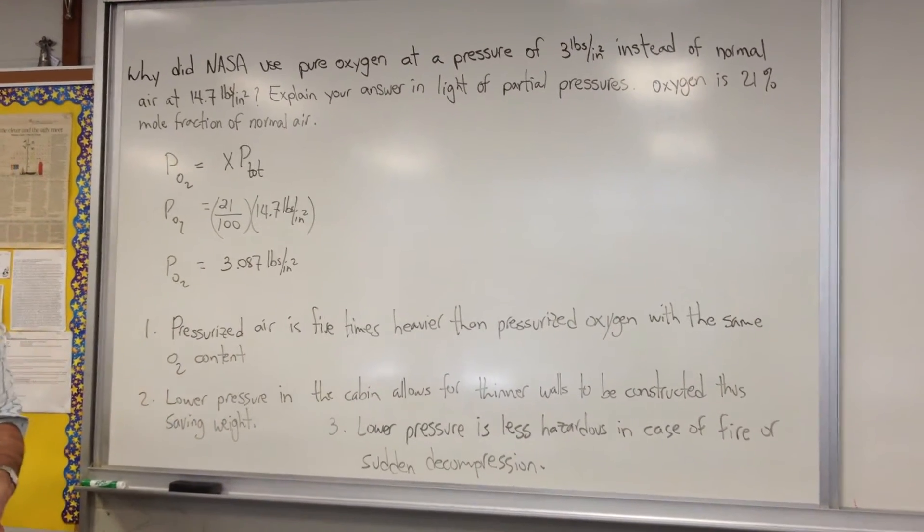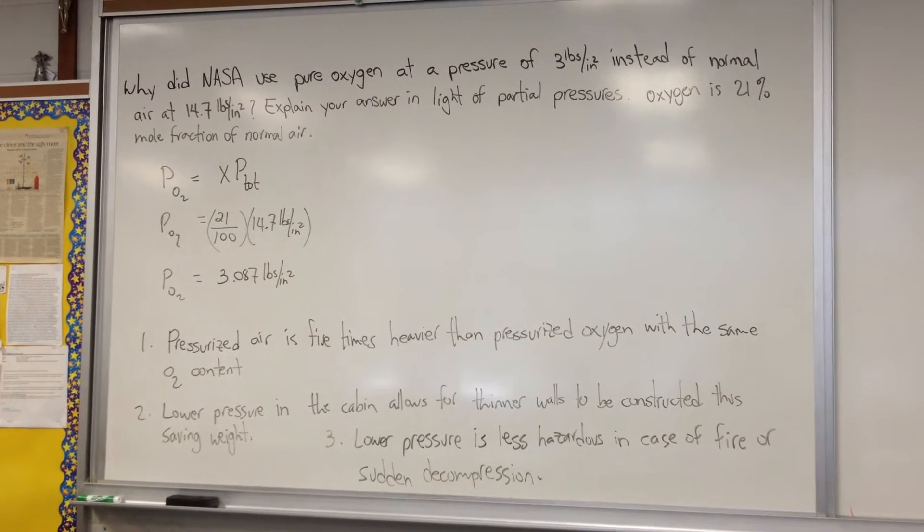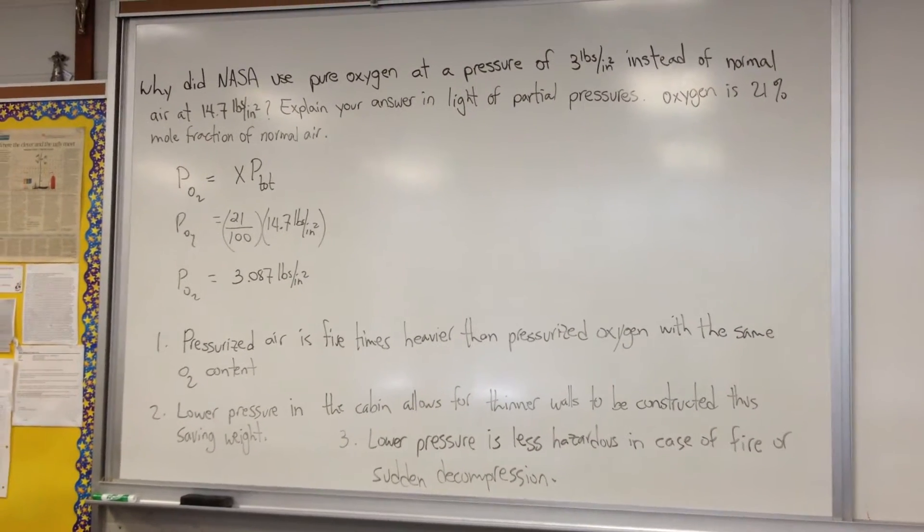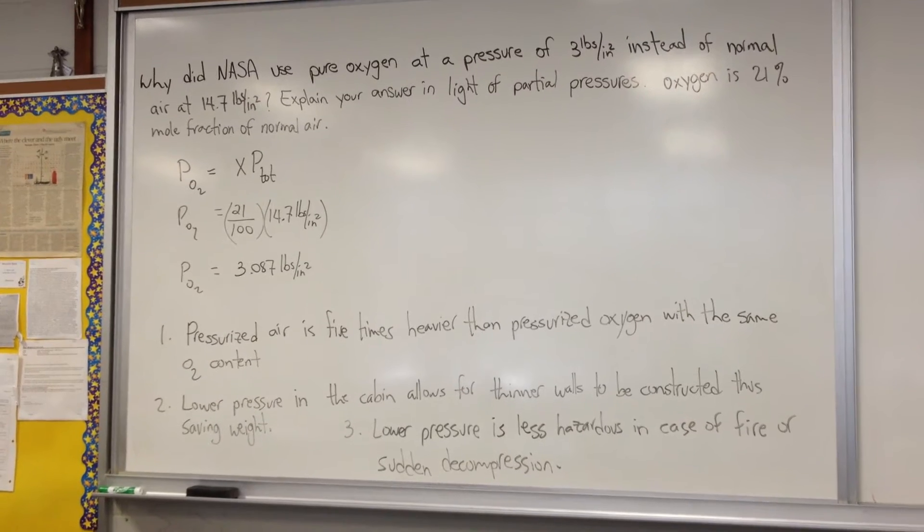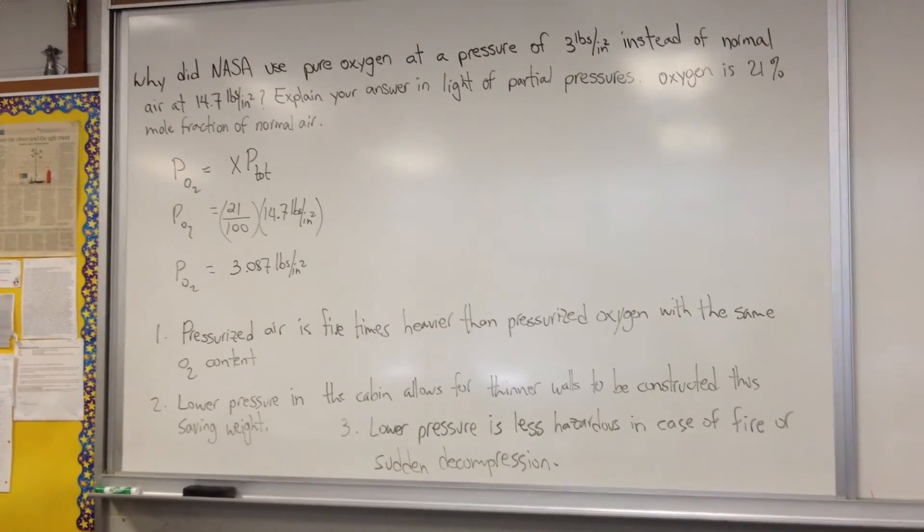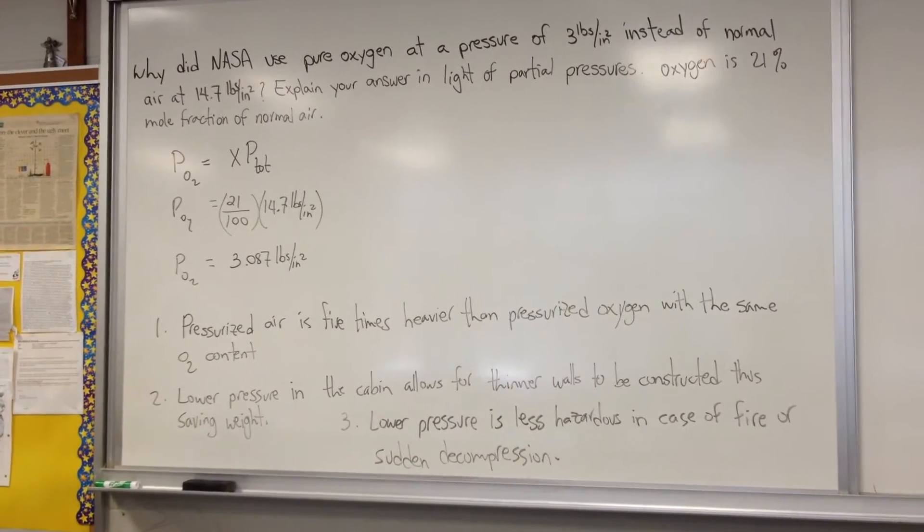The atmospheric content of oxygen is 21% mole fraction, meaning if you had 100 moles of gas from the atmosphere, 21 of those moles would be oxygen.